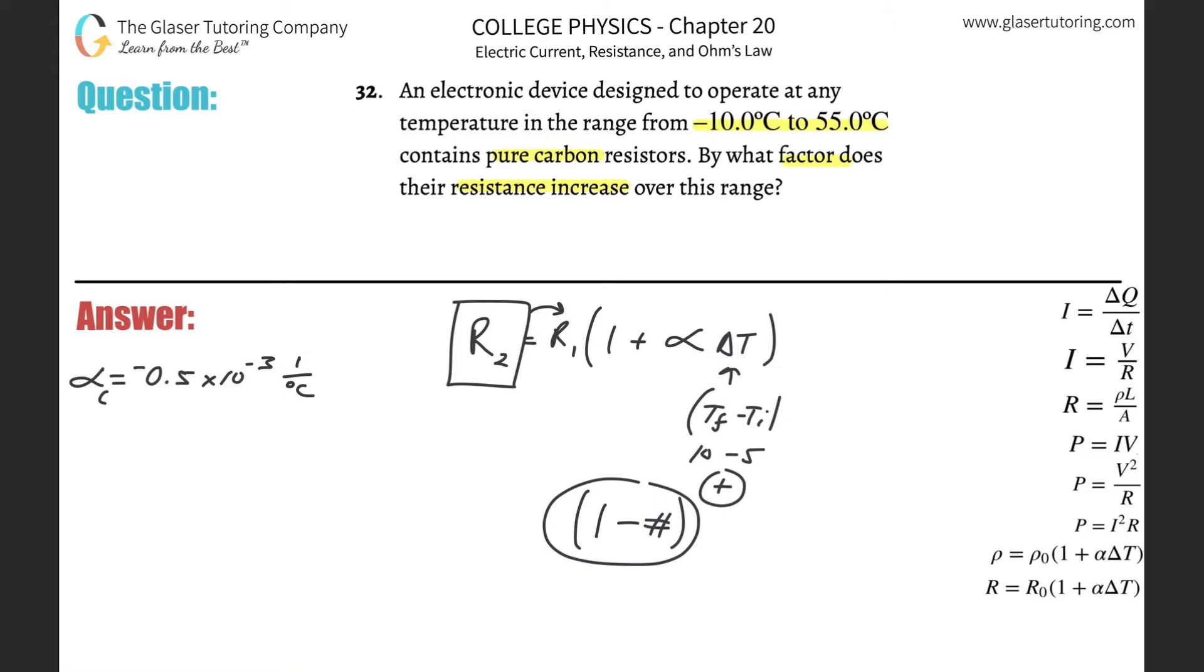So in other words, what I'm trying to say is that when we increase the temperature for carbon, the resistance will go down. Usually it works opposite to that, but that's because the alpha value is going to be negative. So if the resistance were to increase over that range, we must be dealing with a situation where the temperature for carbon is not going up, but rather it's going down.